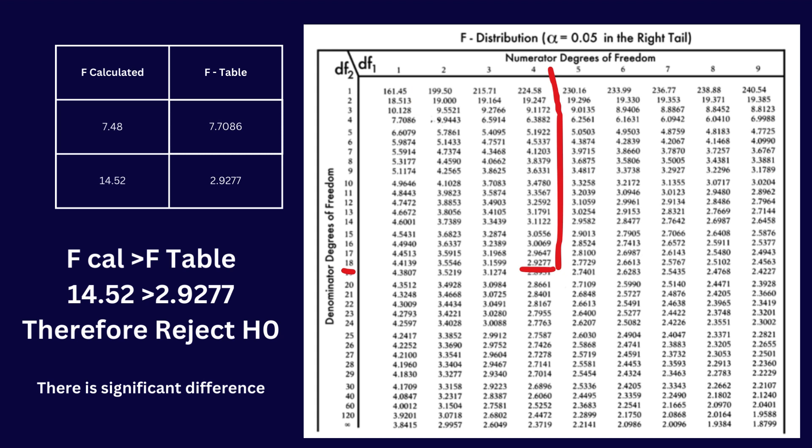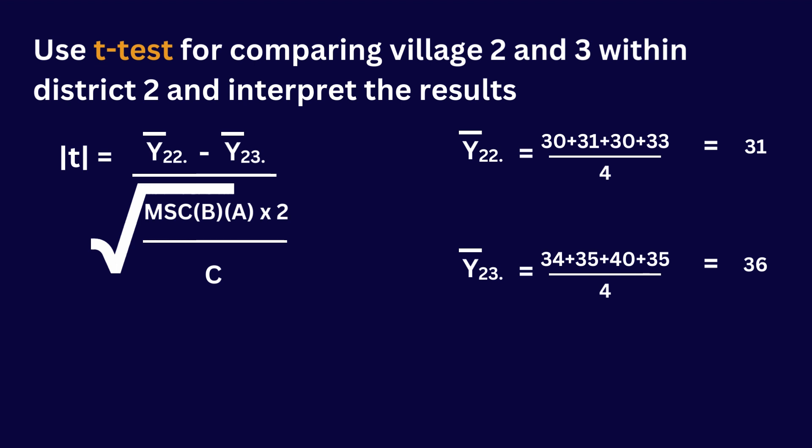For the second F test, the numerator degree of freedom is 4 (degree of freedom for BA) and the denominator degree of freedom is 18 (degree of freedom for CBA). The F table value is 2.9277. Our calculated F value is larger than the F table value, so we reject the null hypothesis H0 and accept the alternative hypothesis H1 — there is a significant difference.